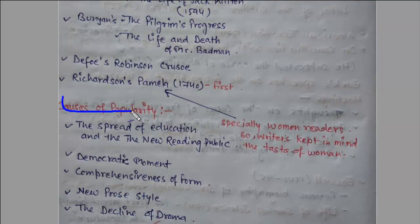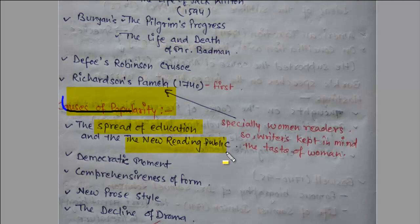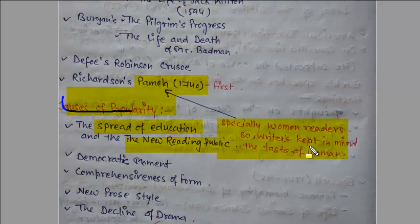Now we can talk about the causes of the popularity of the novel in that particular period of Dr. Johnson. The spread of education and a new reading public emerged. The middle class developed, so people were interested in reading. This was also the period which saw the decline in drama. One important fact: Richardson's 'Pamela' in 1740 is considered the first novel in English literature, and it was especially written for women readers.